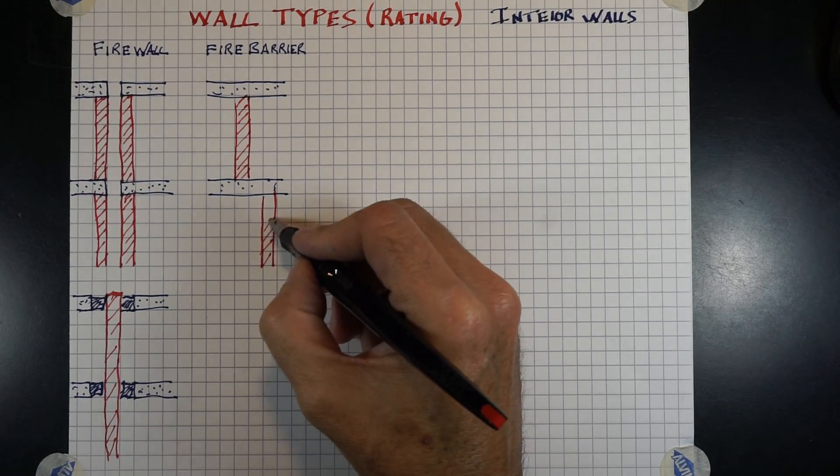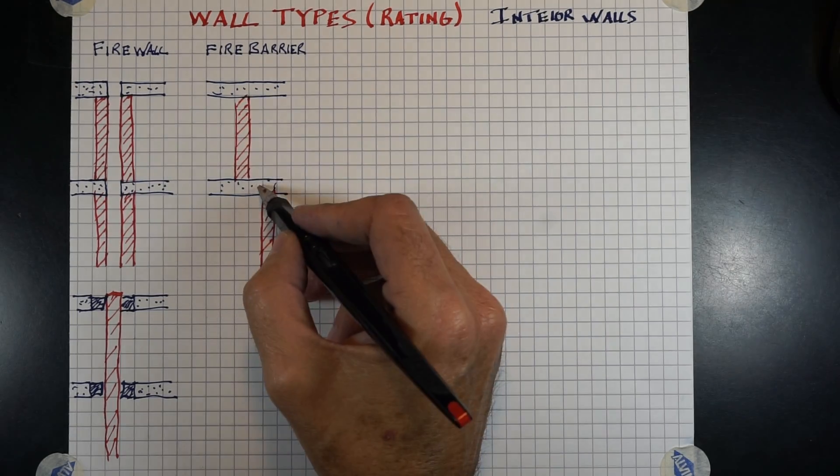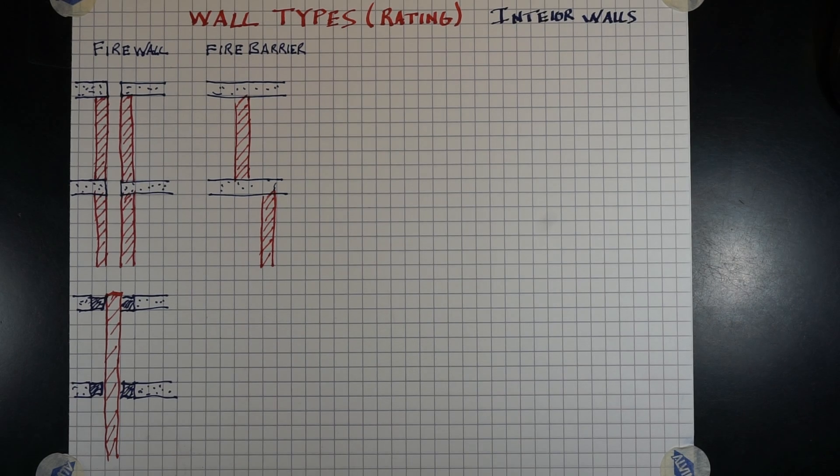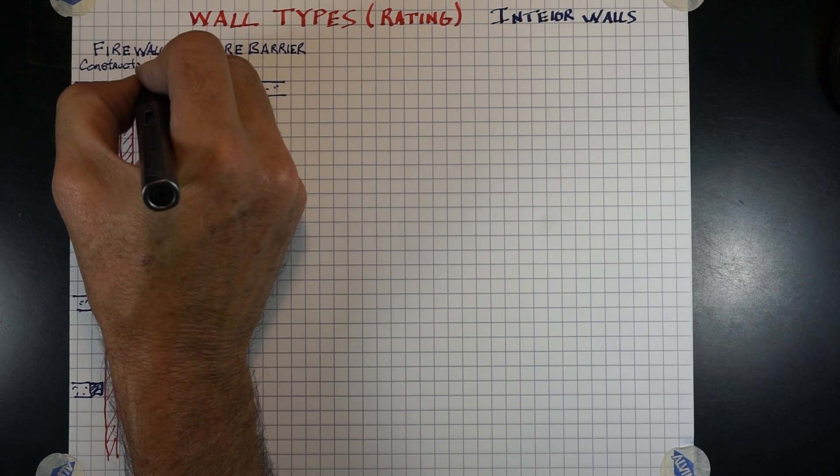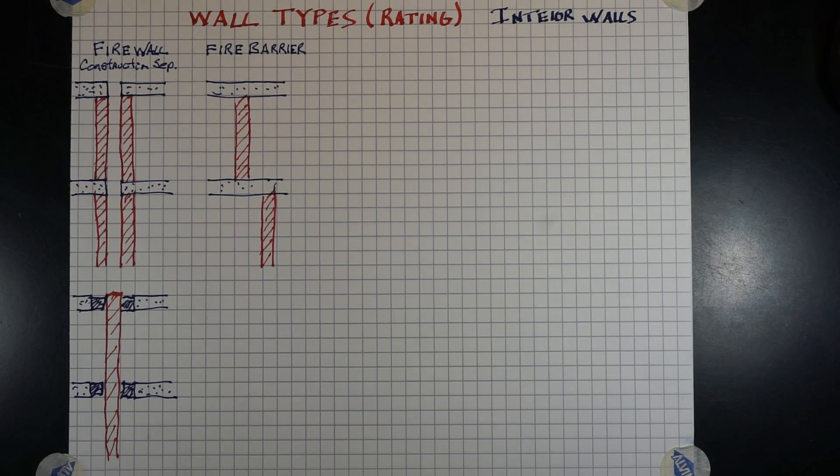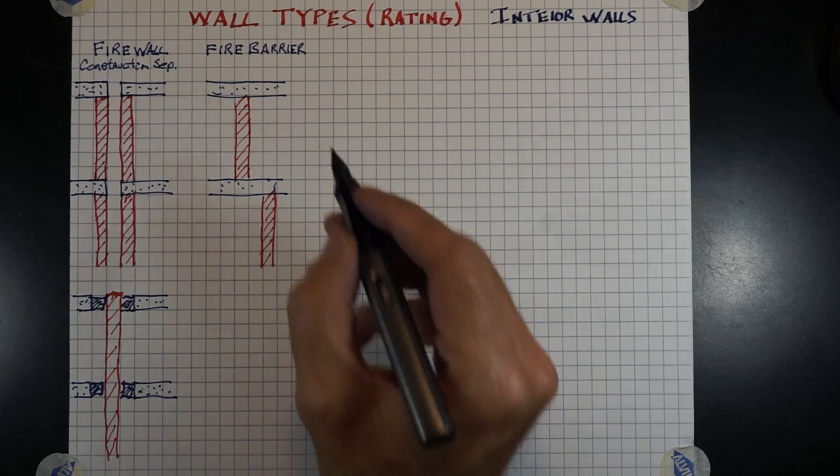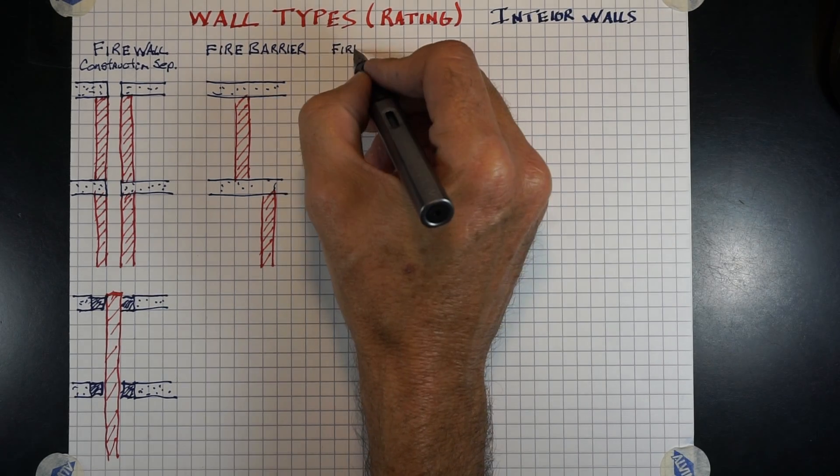Fire barriers, unlike firewalls, do not have to be in alignment. A firewall does have to be in alignment because it has to have its integrity all the way to the ground. A firewall can also separate construction types.